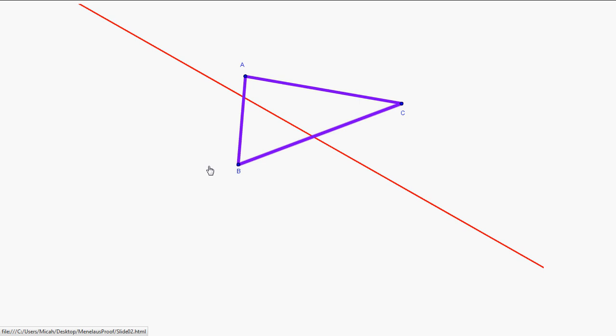Now, Menelaus' Theorem discusses the ratios of division that are created with these three points of intersection. And, it essentially says that the product of those ratios of division must be minus one, provided all three points are on the same line.